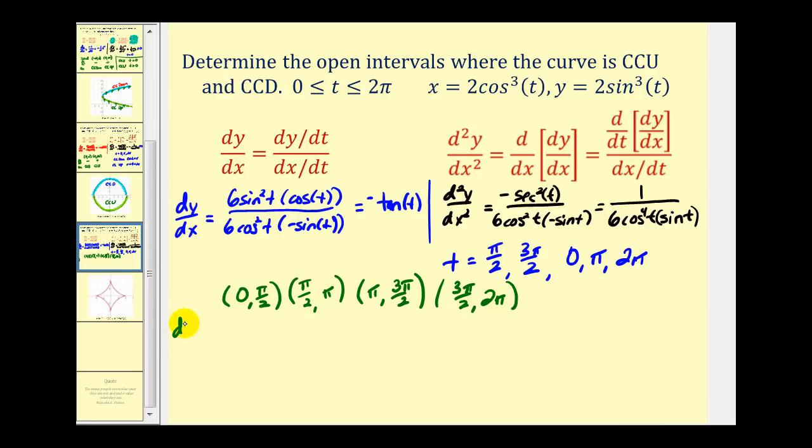And now we need to determine the sign of the second derivative in each of these intervals. And then draw our conclusions. Now one thing that might be helpful to determine the sign of the second derivative here is to consider what quadrant we're in. Because this is the first quadrant, second quadrant, third quadrant, and fourth quadrant. Well in the first quadrant both sine and cosine are positive. So the second derivative will be positive.